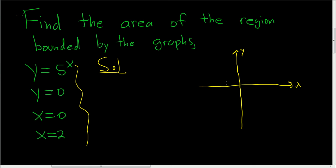So 5 to the x, that's an exponential function, it looks something like this. There's 5 to the x, it's a beautiful curve. And y equals 0, that's the x-axis, so that's this line here, the red horizontal line.